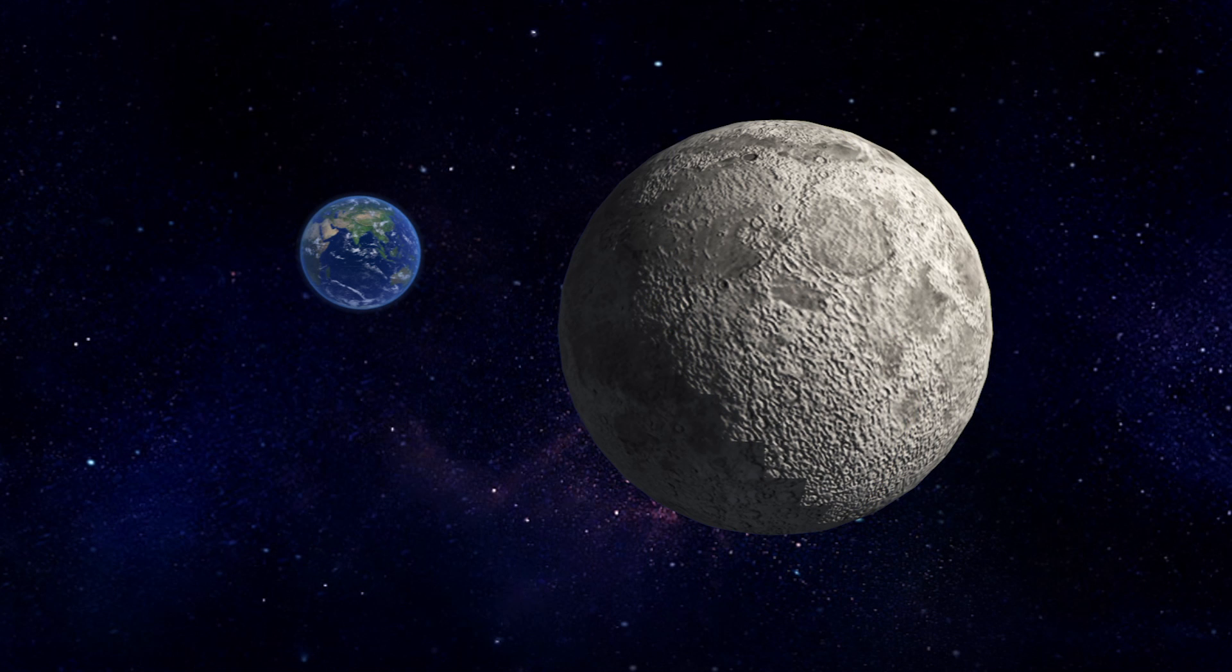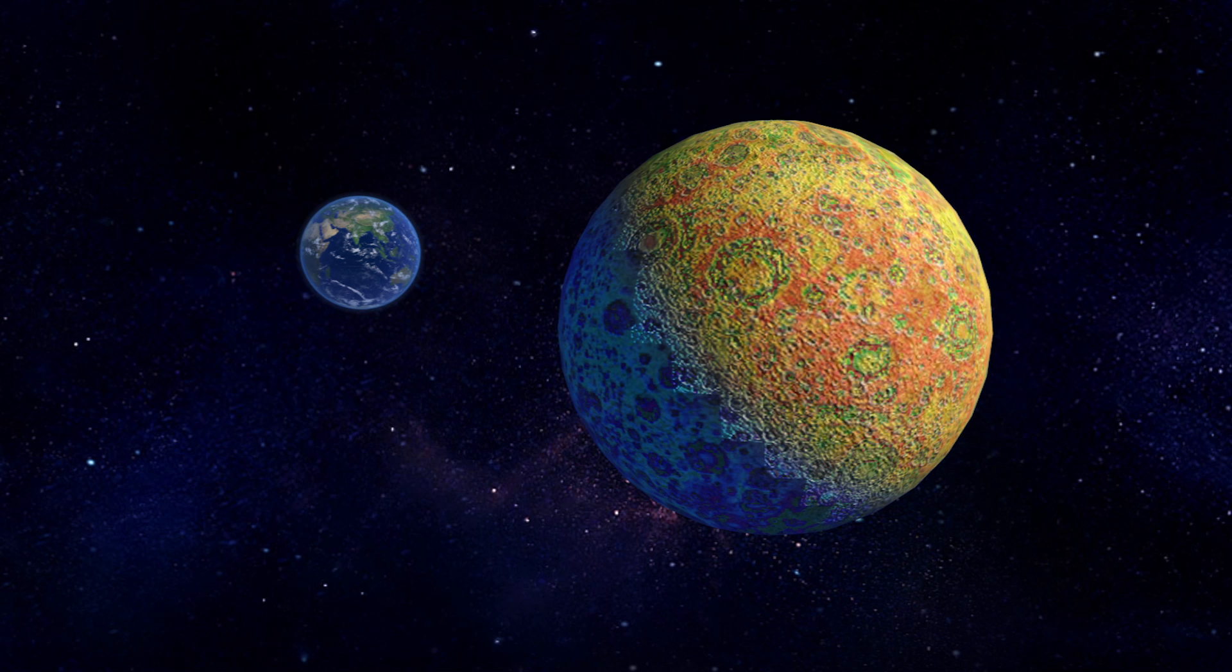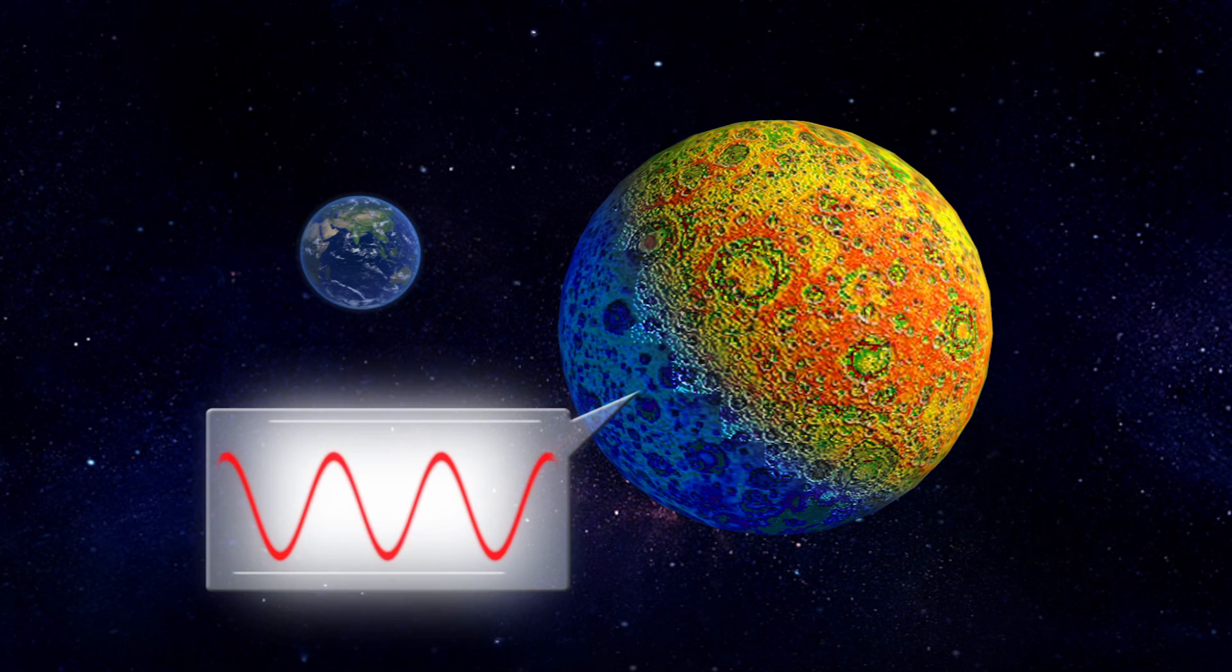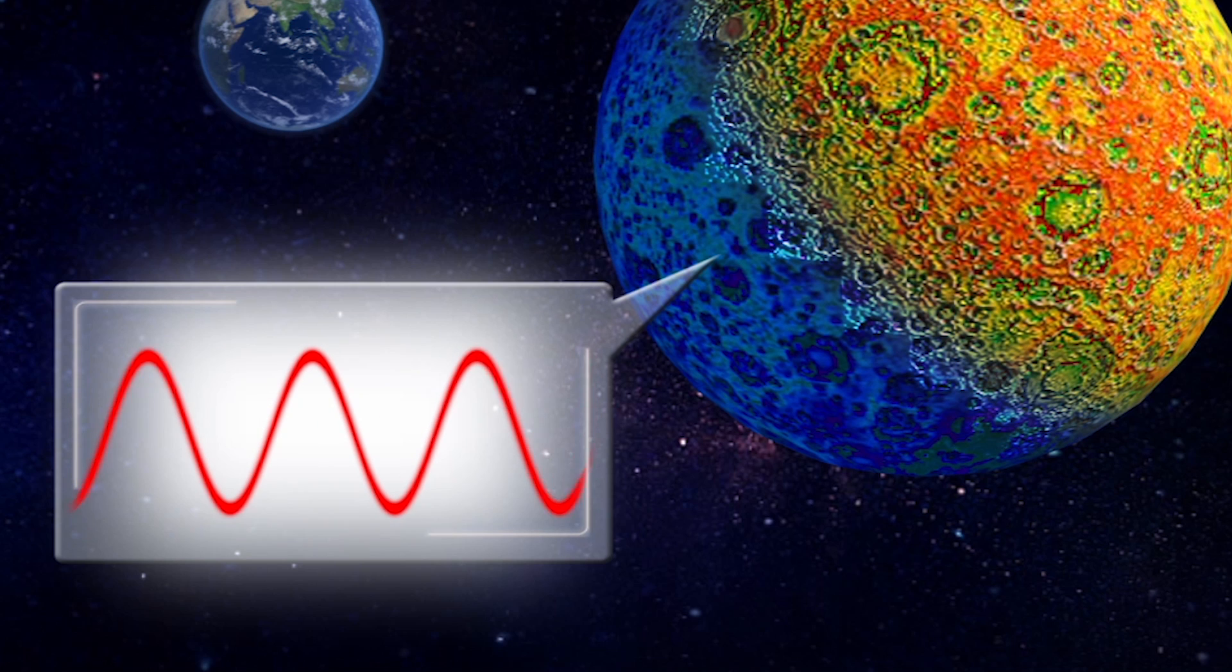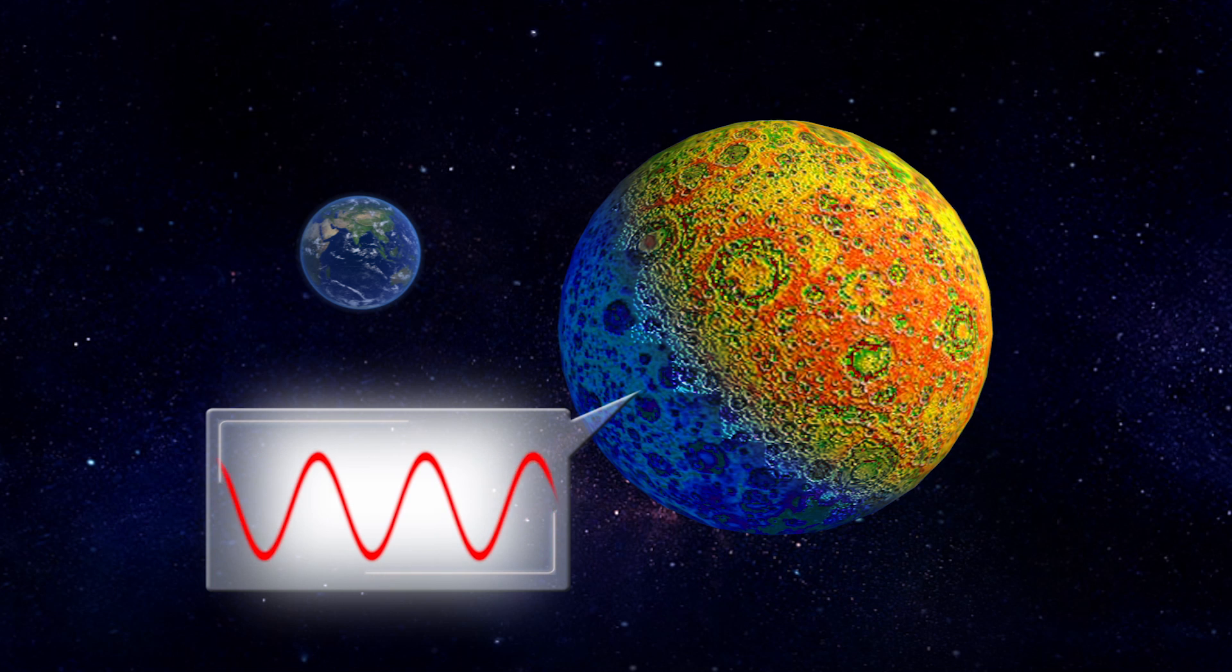An official at the Chinese Academy of Sciences' Moon Exploration Department told China's state-run CCTV that the Moon's dark side has a clean electromagnetic environment, which is an ideal field for low-frequency radio study.